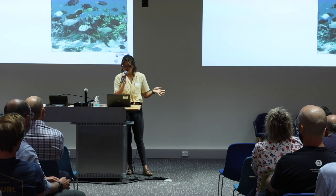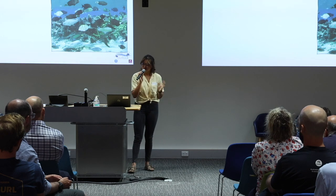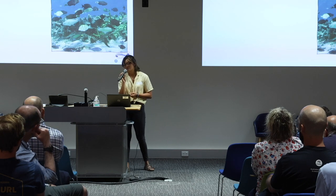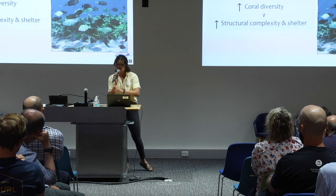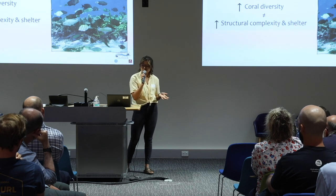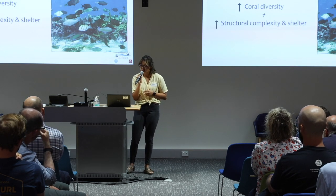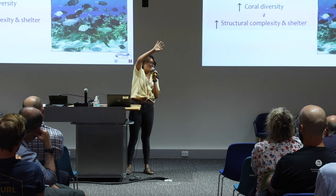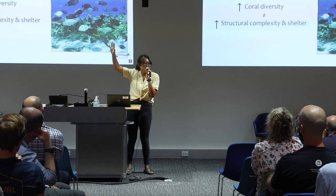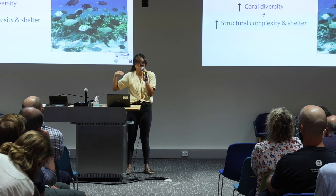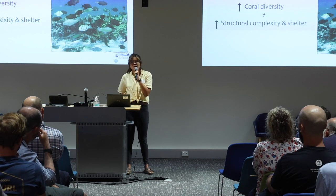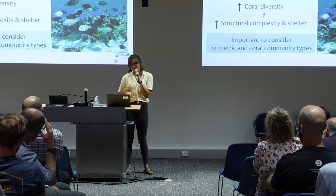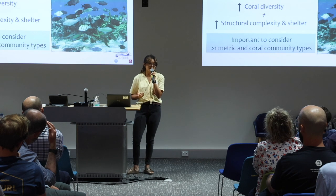We also looked at these metrics in monospecific communities — all 10 different types — and found that not only are the structural complexity metrics strongly correlated with each other, but all metrics are strongly correlated with all others. The main takeaway is that different metrics give different conclusions about structural complexity and shelter, and that greater coral diversity doesn't necessarily mean greater structural complexity and shelter — meaning the commonly assumed relationship between diversity, structural complexity and shelter is not true for all coral community types.